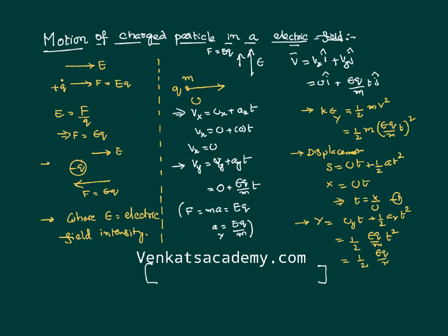I can substitute the value of T from the displacement equation, which becomes EQ by M, and T is X by U, so X squared by U squared. It is very clear: half is a constant, electric field is constant, charge is constant, mass is constant, and initial velocity is constant.